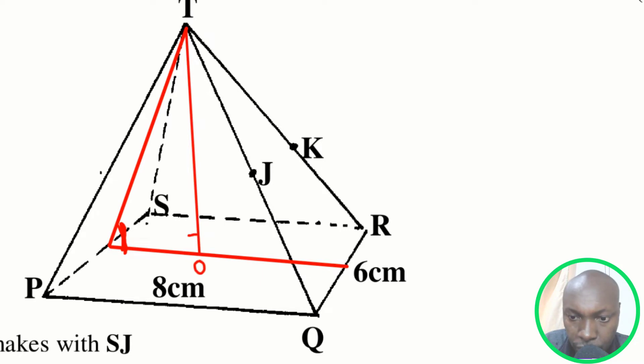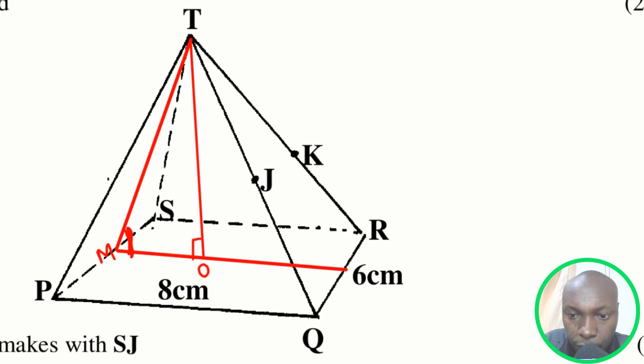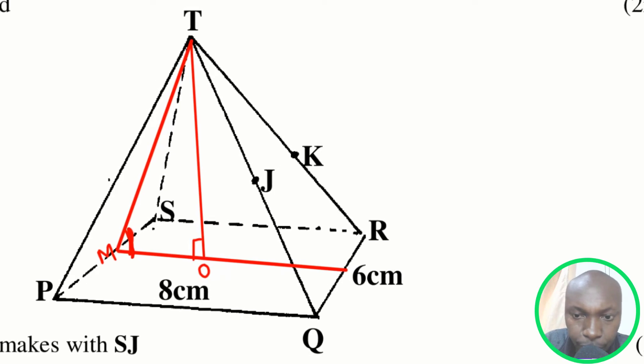The height will be perpendicular to the base. So you notice if I name this point to be M, you notice that here I'll form a right angle triangle. This rectangle is TMO - TMO. Let me extract it here.